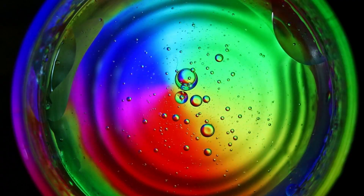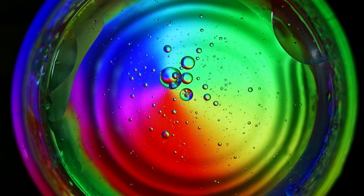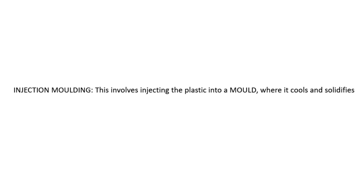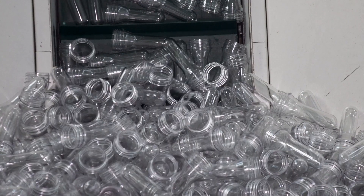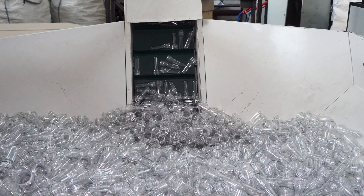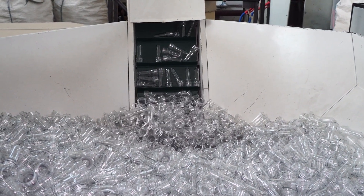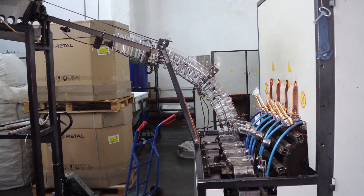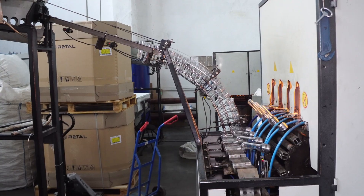Here we see various colors being added. The last step involves injection molding, where the plastic in molten form is placed into a mold where it cools and solidifies. Here you can see the plastics coming out of the injection mold in solidified form, and the conveyor belt delivers the finished plastic bottles.